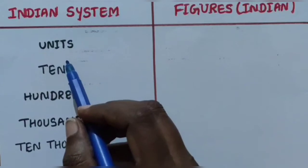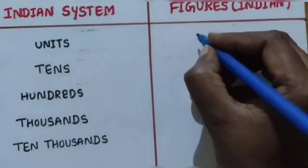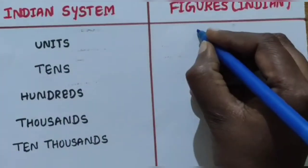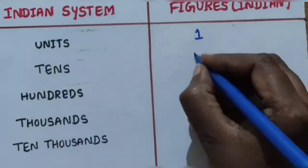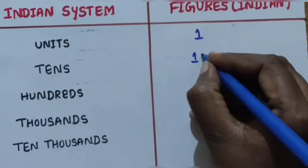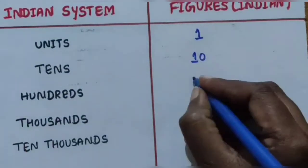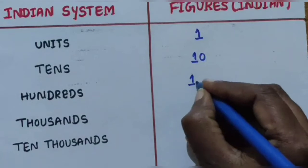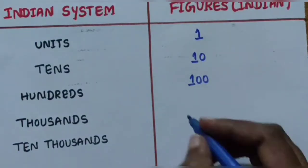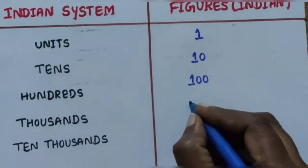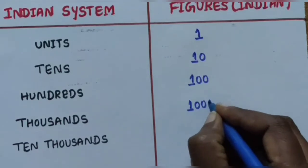First is Units or Ones - unit means one. Then Tens, which is written as 10 (one zero). Then Hundreds, written as 100 (one, zero, zero). Then Thousands, written as 1000 (one, zero, zero, zero).